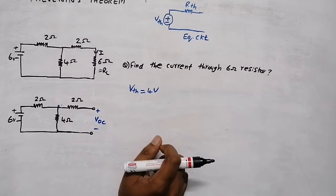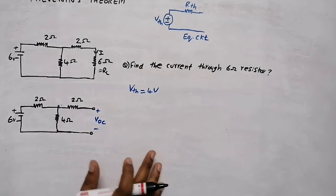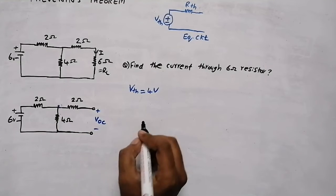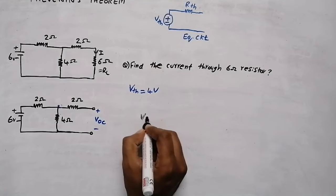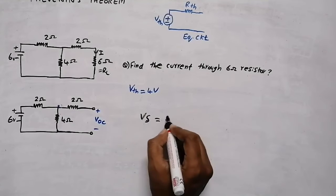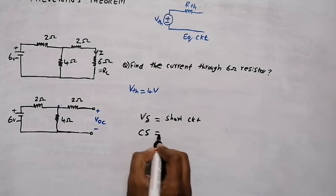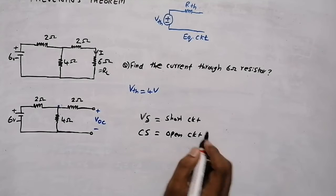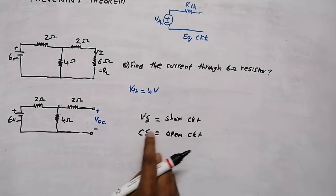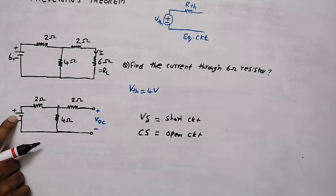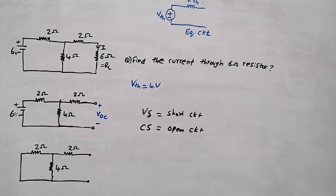To find Rth, check the voltage sources and current sources in the circuit. If there is a voltage source, we need to short circuit it. If there is a current source, we need to open circuit it. In this question we have a voltage source, so we short circuit that path. We have now short circuited the voltage source.